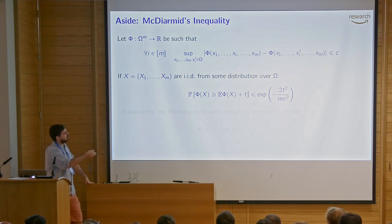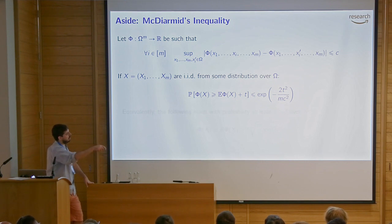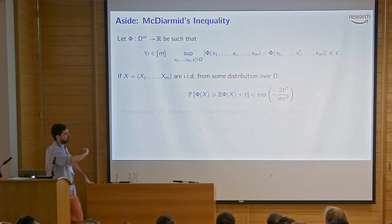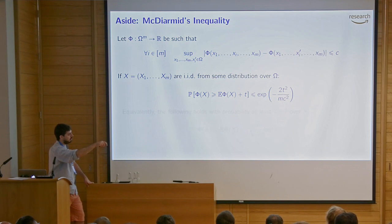Specifically: the probability that phi of x exceeds its expectation plus t is bounded by something that decreases like exp(-2t²/(m·c²)). There's an m in the exponent that seems anti-intuitive at first, but c² is typically something like 1/m, so you get an m in there and things concentrate more as you get more data. Usually instead of writing this form, you rearrange: set this probability equal to delta and solve for t.